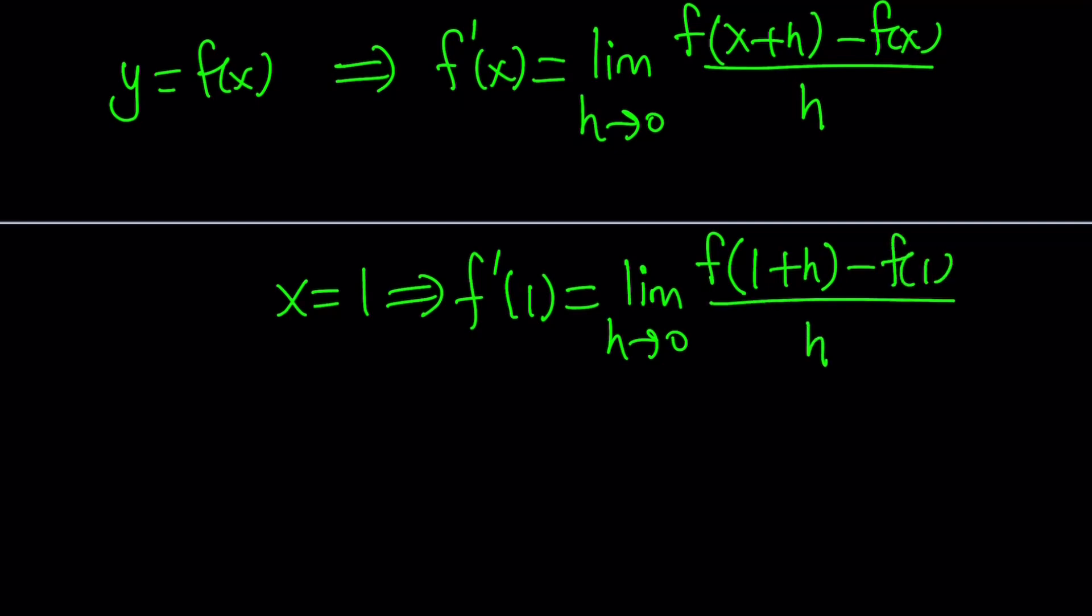Now, can we evaluate this limit directly? If you plug in h equals 0, you get f of 1 minus f of 1, which is 0, divided by 0, which is kind of weird. We kind of have to fix that problem. So here's one thing we can do, though.